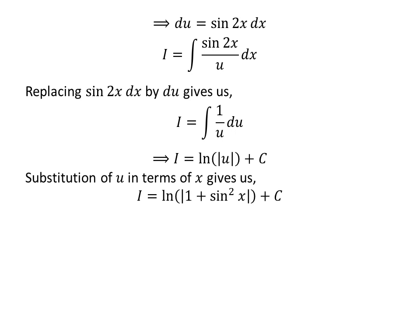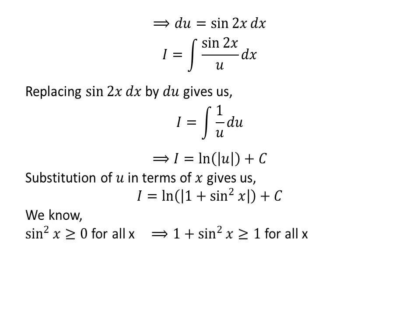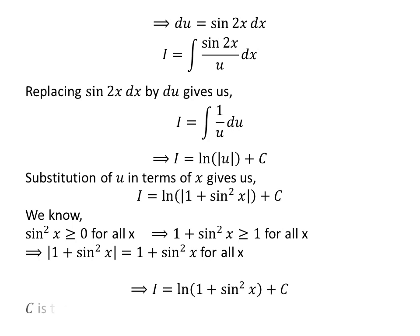Now, let us replace u by its value 1 plus sin²(x). So, i is equal to natural log of the absolute value of 1 plus sin²(x) plus C. We know sin²(x) is a positive real number for all x, so 1 plus sin²(x) is positive for all x. As the absolute value of a positive real number equals itself, the absolute value of 1 plus sin²(x) equals 1 plus sin²(x). So, i is equal to natural log of 1 plus sin²(x) plus C.